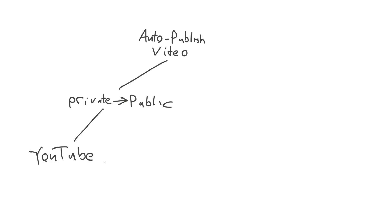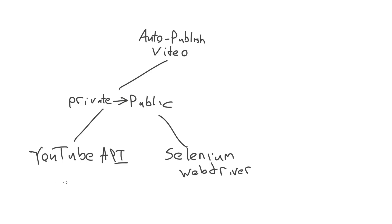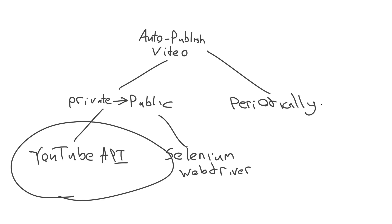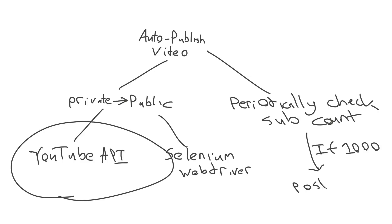First off, there's a YouTube API — that's definitely where my brain goes immediately. But we can also use something like a Selenium web driver to automatically do the login process and handle things on a web browser side. Generally my recommendation is: if there's an API available, try that first before going the web driver route. The second aspect is we need code that can periodically run, check the current subscriber count, and when that number hits 1,000, automatically upload the video. We could even make it check more frequently when close to 1,000 and less frequently when farther away.